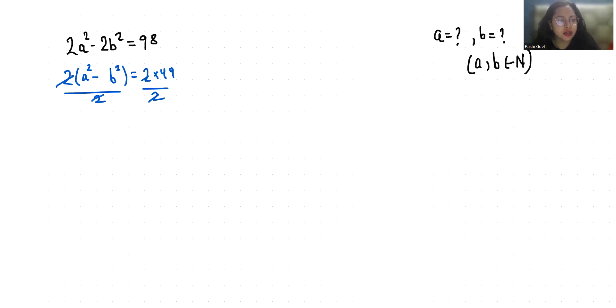So a² - b² equals 49 and we have a very famous identity: a² - b² equals (a+b)(a-b) equals 49.